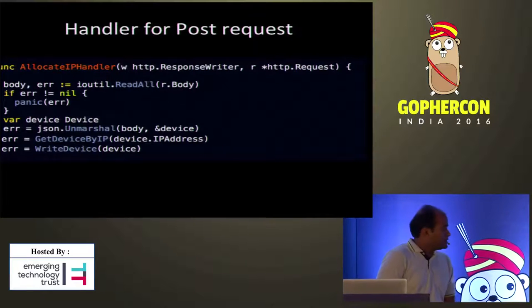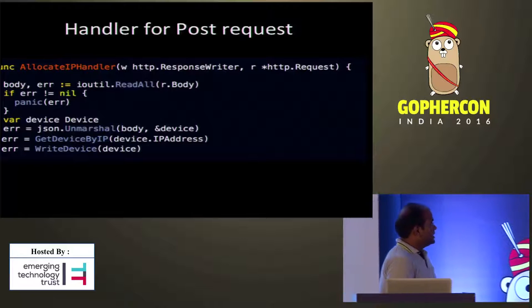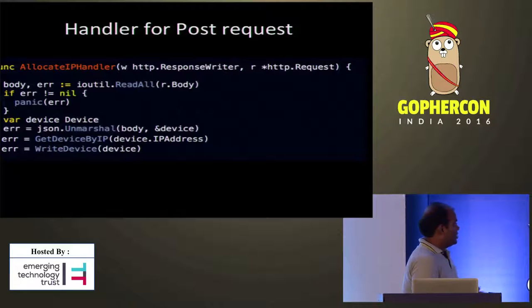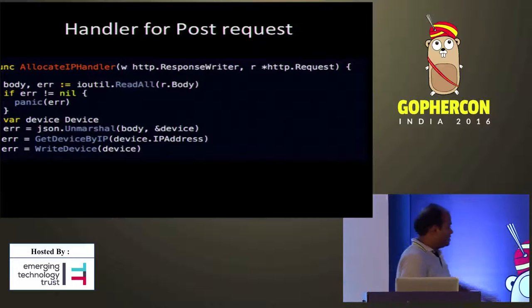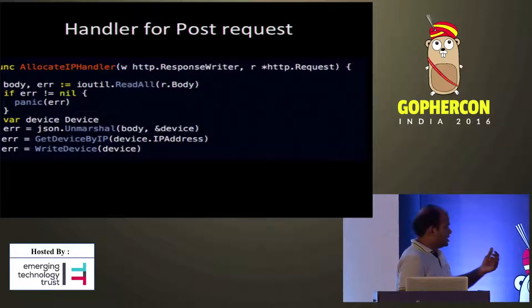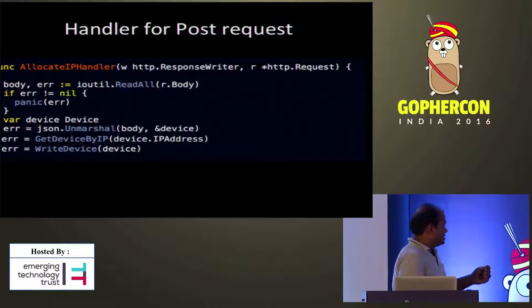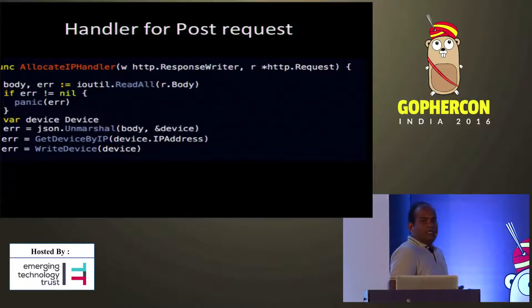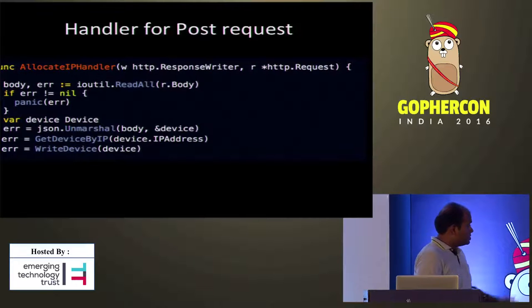Next, let's look at the POST request. The difference between GET and POST is that for POST, we get a body, so we have to read the data from the body. Error handling is omitted to keep it brief. First, the request is unmarshalled. If there are any errors, that is handled. Then GetDeviceByIP is called to check if the IP is already added or not. If everything is fine, it just writes the device to the file.